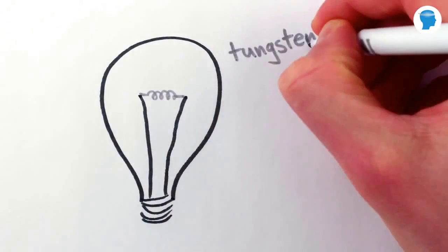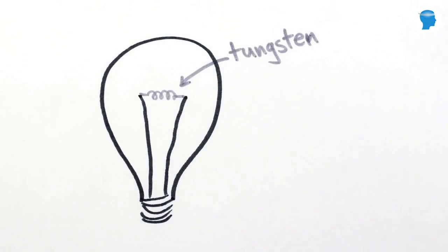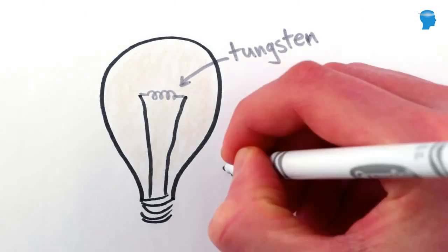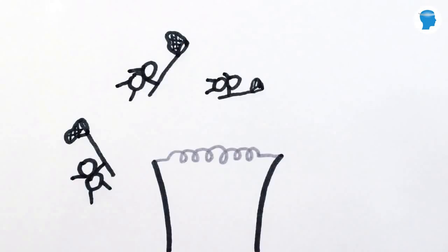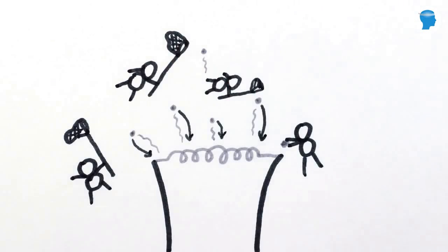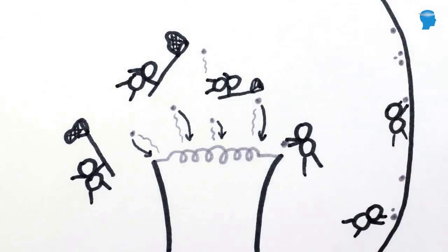Halogen bulbs have the same tungsten metal filament as typical incandescent light bulbs, but they contain a little bit of a halogen-based gas in the bulb as well. The chemistry of the halogen gas allows it to capture stray tungsten atoms that evaporated off the filament and shepherd them back to where they belong, which both prolongs the life of the filament as well as keeps the inside of the bulb clean and clear.